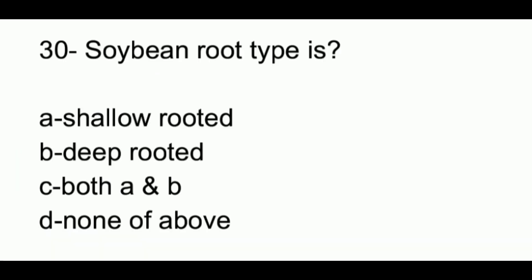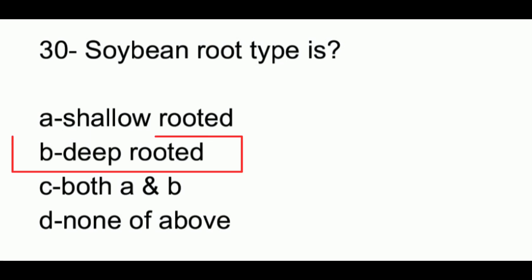Question number 30. Soybean root type is: option A, shallow rooted; option B, deep rooted; option C, both A and B; option D, none of the above. The answer to this question is option B, which is deep rooted.